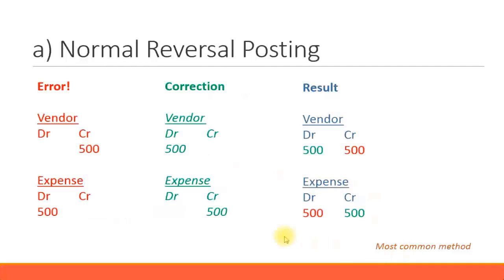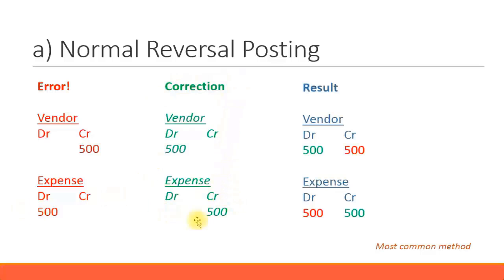Let's look at an example of the normal reversal posting. For example, you have made an entry for a vendor invoice. Standard accounting practice for a vendor invoice is to credit the vendor and debit the expenses. I have highlighted this in red fonts. So if you posted these entries incorrectly and need to correct this posting, when you do a normal reversal in SAP, the system will post a debit of $500 for the vendor — opposite of what was posted initially — and a credit of $500 for the expenses, which is opposite of the original expense posting. I have shown this in green as a correction posting.